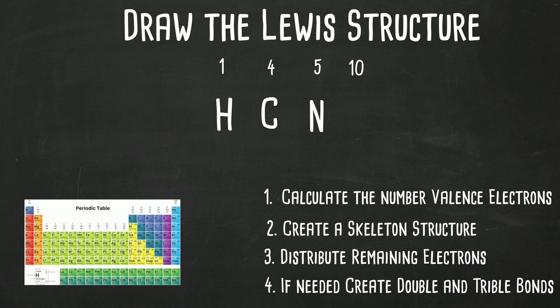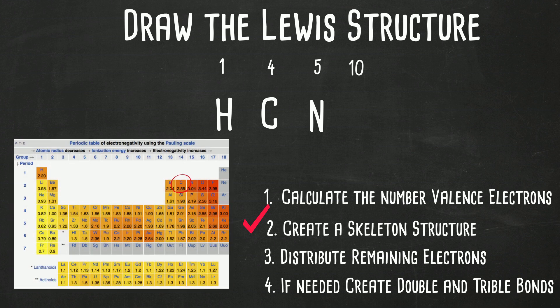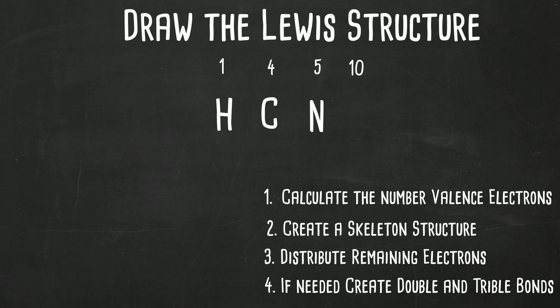Okay which element are we going to put in the center? Carbon has the lowest electronegativity. You can look at the chart and also remember the shortcut. You can look at fluorine and notice that it's a little further away than nitrogen. So we've got carbon in the middle and then hydrogen and nitrogen.